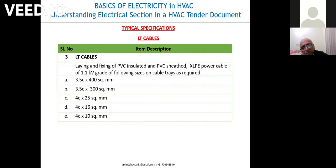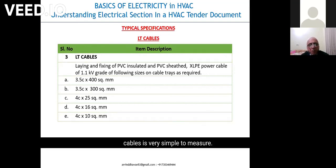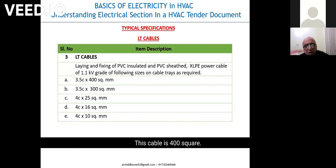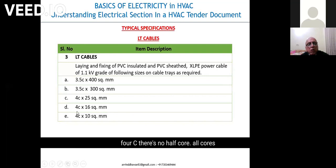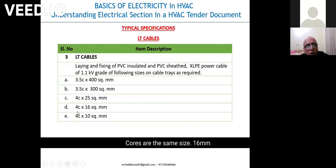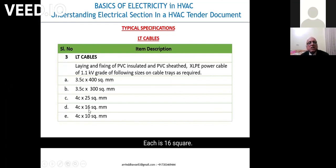Cables. Cables are very simple to measure — linear length. 3.5C means three and a half core, 400 square mm. This cable is 400 square mm, three and a half core. Then coming down, 4C — there's no half core, all cores are the same size, 16 mm. That means this cable has four cores, each of 16 square mm.